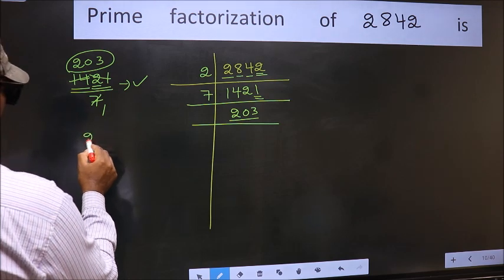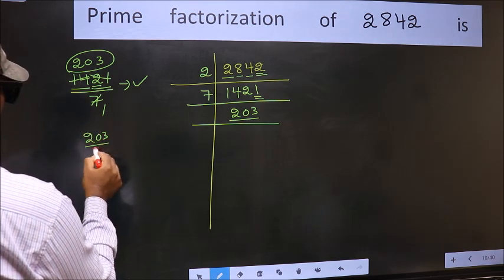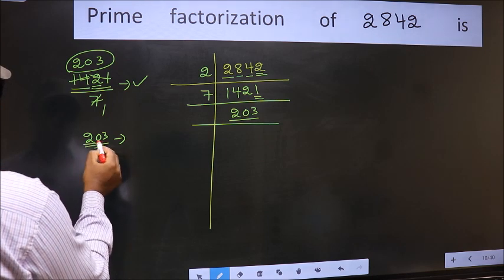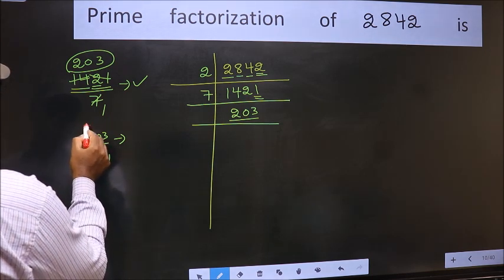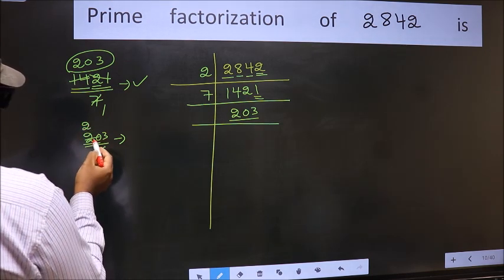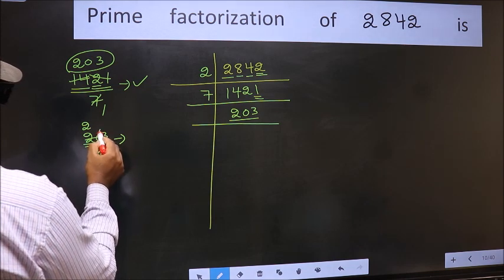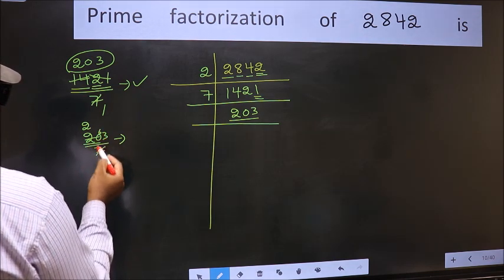So let us check 203 by 7. A number close to 20 in 7 table is 7×2=14. 20 minus 14 is 6. 6 carried forward, 63.